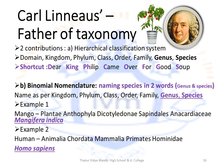Carl Linnaeus is known as the father of taxonomy — basically the science of classification. He gave us two contributions. First, a hierarchical classification system, the shortcut for which is: 'Dear King Philip Came Over For Good Soup.' It begins with Domain, next Kingdom, next Phylum, next Class, next Order, followed by Family, Genus and finally Species.